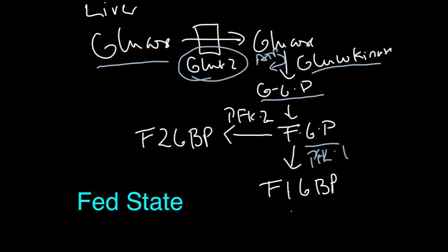In the fed state, you want glycolysis to proceed forward. This metabolite is made, and it's a positive regulator of PFK1. In order for PFK1 to continue, you need to have that fructose 2,6-bisphosphate.